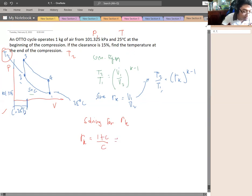So substitute for 15%. Sorry for the typographical error. 1 plus 0.15 all over 0.15. So the RK will be equals to 7.67. So this is the compression ratio. And substituting from our general equation.